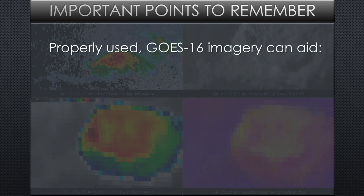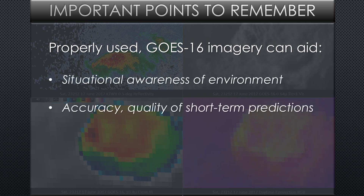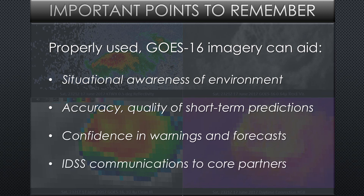As your ability to make such adjustments improves, you may well find GOES-R series satellite imagery and derived products to be valuable tools that can enhance your situational awareness of the environment, increase the accuracy, quality, and timeliness of your forecasts, strengthen your confidence in those forecasts, and improve your communication with core partners who need your expertise to make effective risk management decisions.